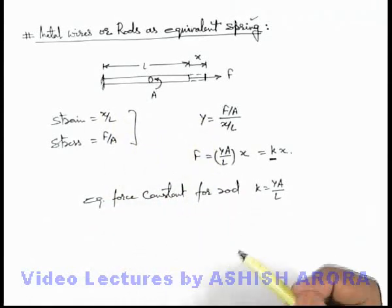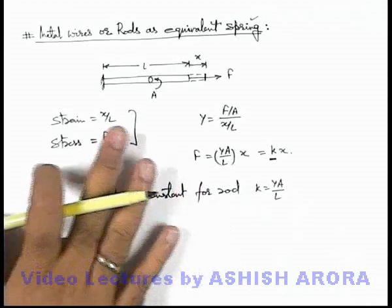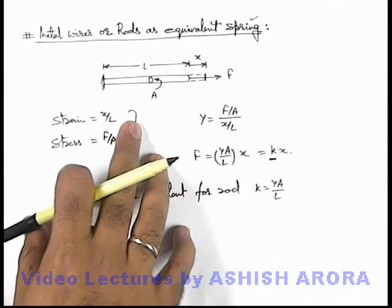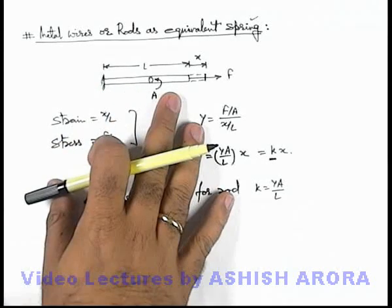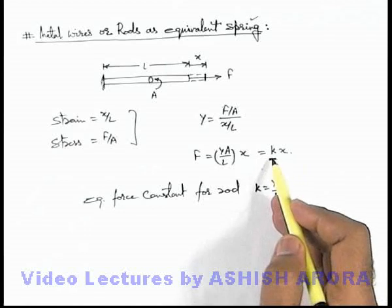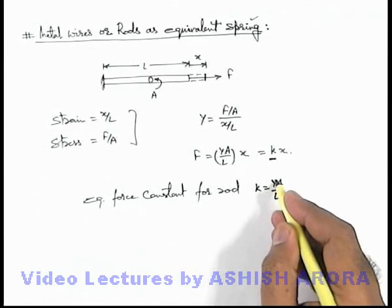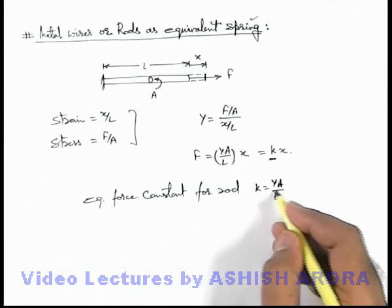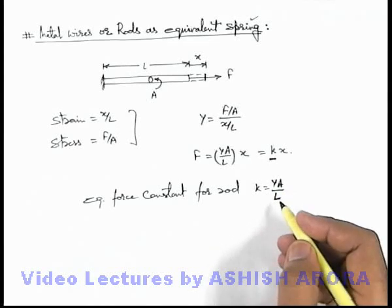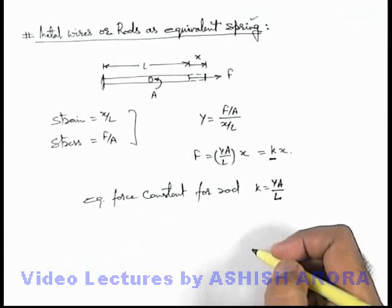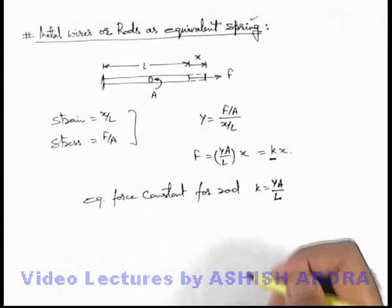Due to the elasticity of a material, we will discuss a similar concept there as well. But right now we should note that whenever metal wires or rods are present, these can be treated like an equivalent spring having force constant equal to the product of Young's modulus and the cross-sectional area, divided by the initial or un-stretched length of the wire.